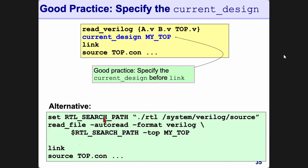This is just one way of doing it and there are multiple ways. Set a variable — for example, 'rtl_search_path' — and specify all the directories you want DC to look in for your RTL files. This is slightly different from the search path. Then issue the command: read_file -auto_read -format verilog — the backslash means the command continues on the next line.